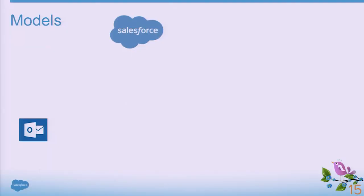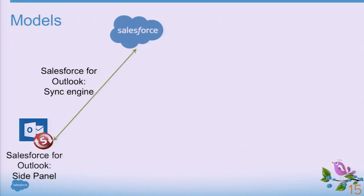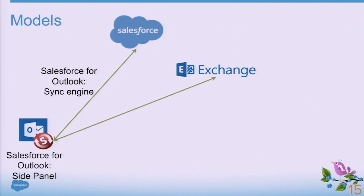I'll start the roadmap section with a model describing all the integration we have in place today. On top, I'm representing the Sales Cloud as well as the Outlook application. What we have today with Salesforce for Outlook is the synchronization engine to make sure your calendar and contact information looks the same between Salesforce and Outlook, as well as that side panel experience in Outlook.